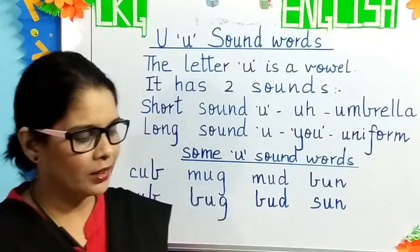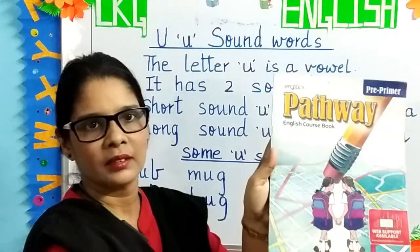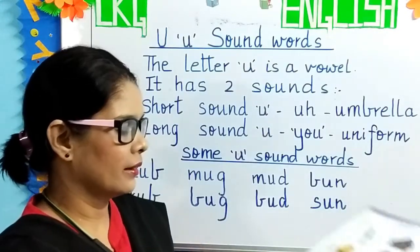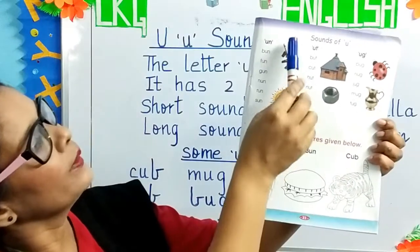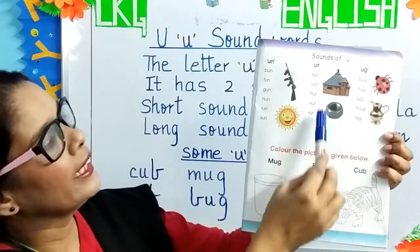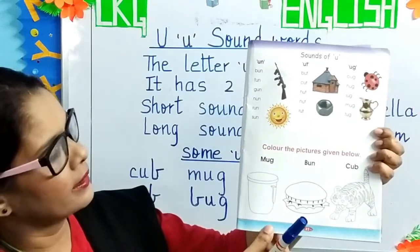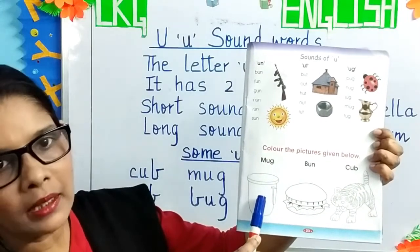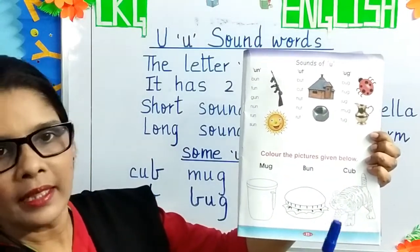Children, all of you have the pathway book. Open page 23. Here we have the U sound words. You have to read it and learn the spellings. Some words here are M-U-G, mug. B-U-N, bun. C-U-B, cub.